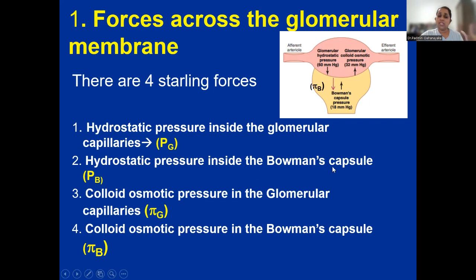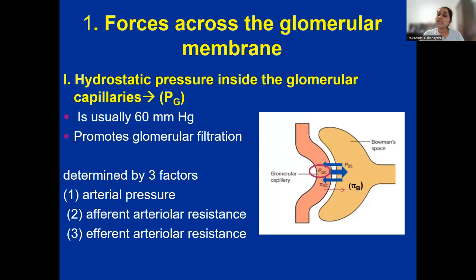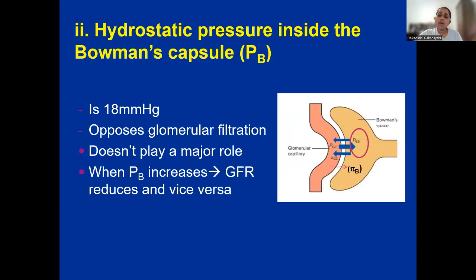Hydrostatic pressure inside the glomerular capillaries, denoted PG, is about 60 mmHg and promotes glomerular filtration. It is determined by three factors: arterial pressure, afferent arteriolar resistance, and efferent arteriolar resistance. The hydrostatic pressure within the Bowman's capsule, denoted PB, opposes glomerular filtration and is about 18 mmHg. Remember it plays a very minor role. When Bowman's capsular hydrostatic pressure increases, GFR reduces.